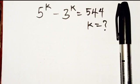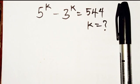Hello, good viewers, you are highly welcome. In today's tutorial, we are going to be solving this beautiful olympiad problem. This is a very interesting question, so I would like you to stay focused and give me your full attention so that we can solve this together. We have 5 to the power k minus 3 to the power k equals 544, where k is the variable we are looking for.